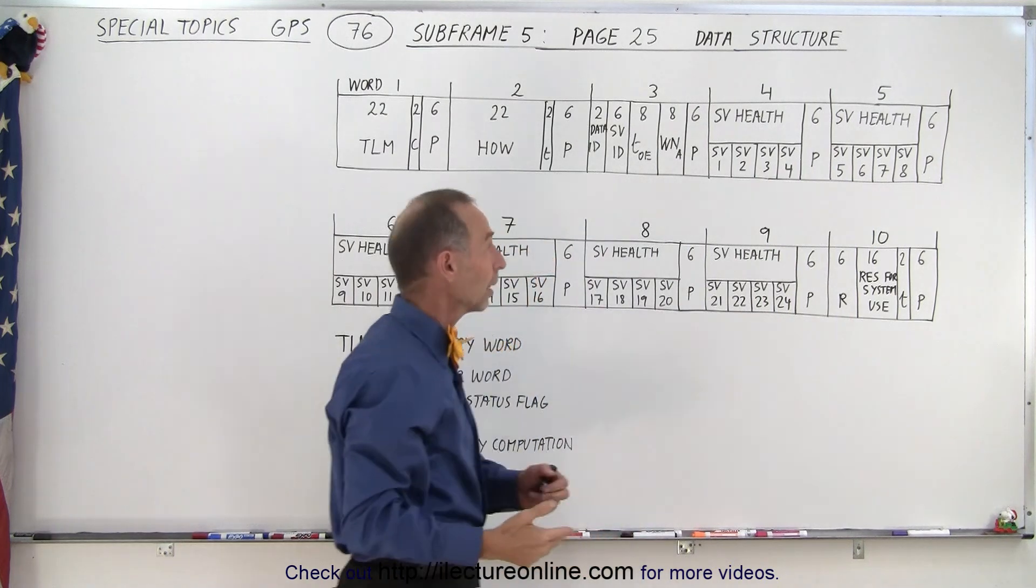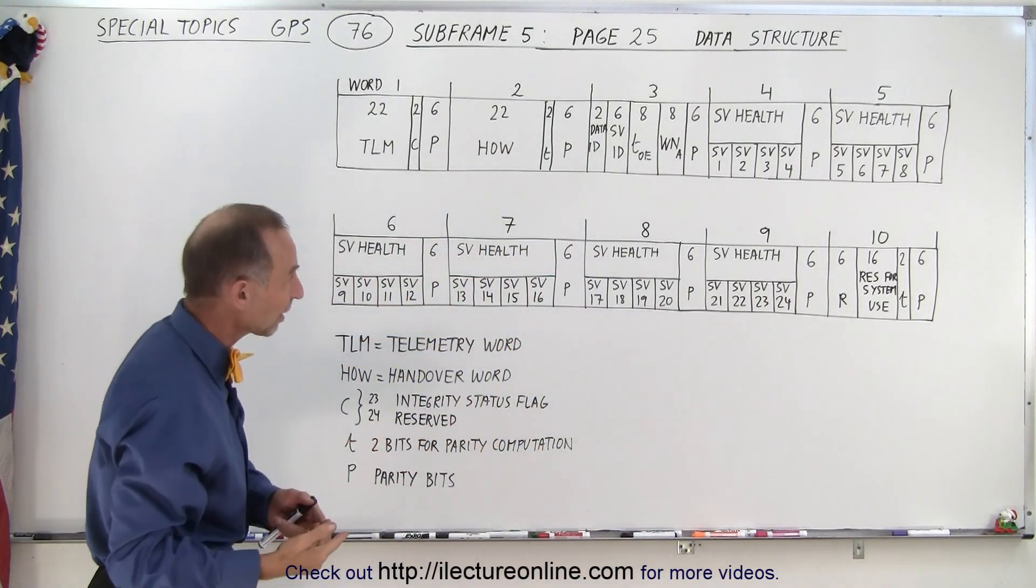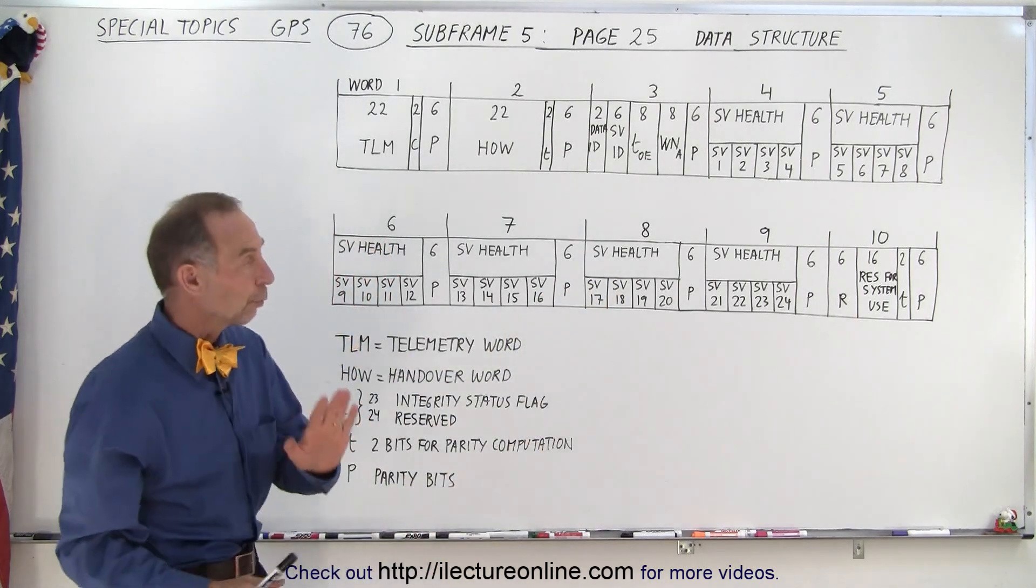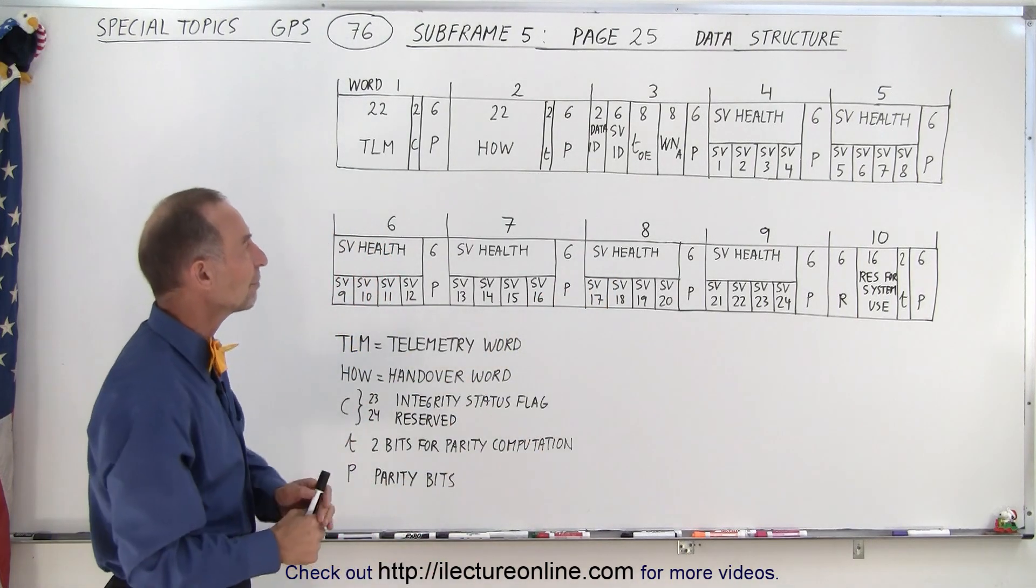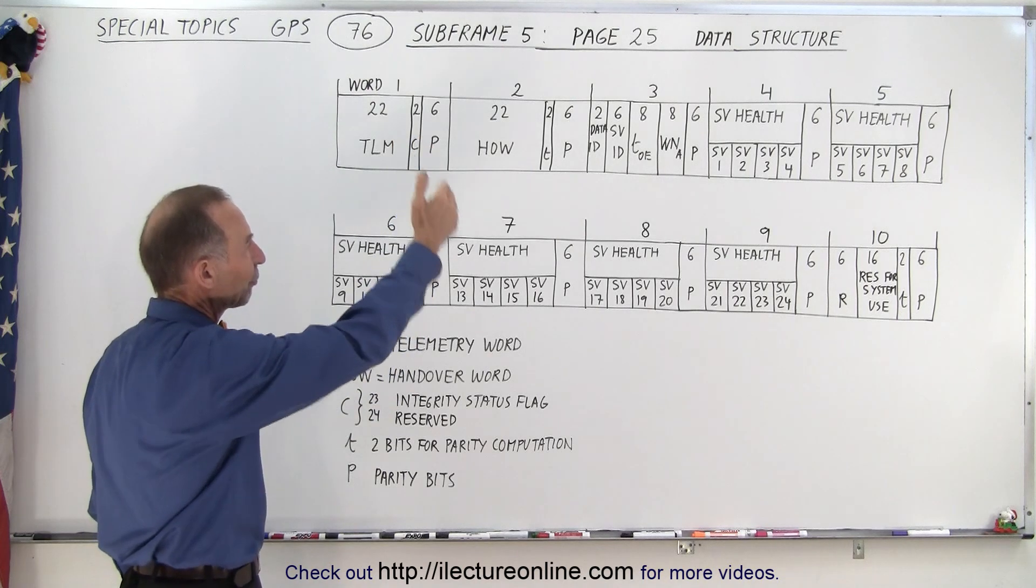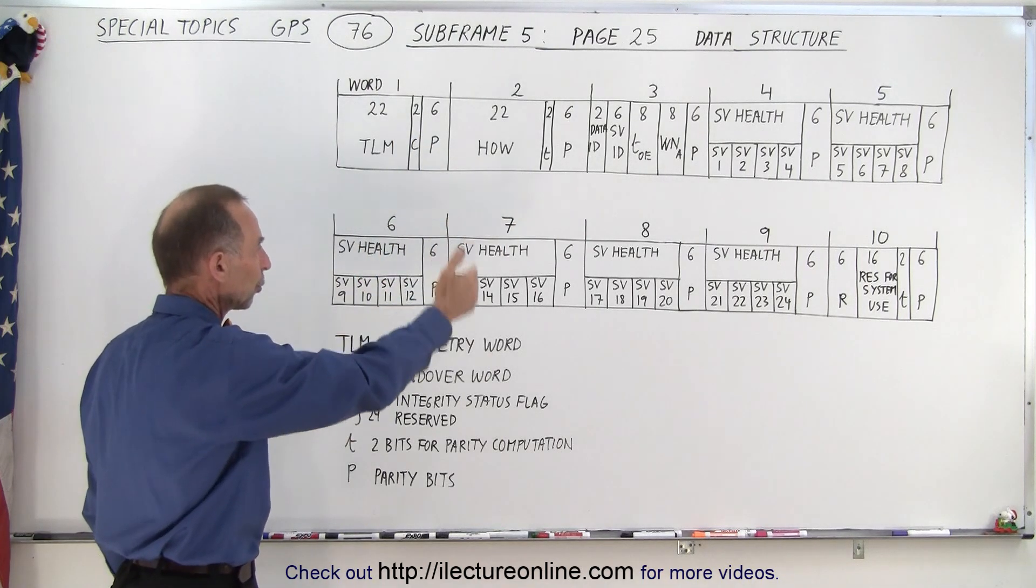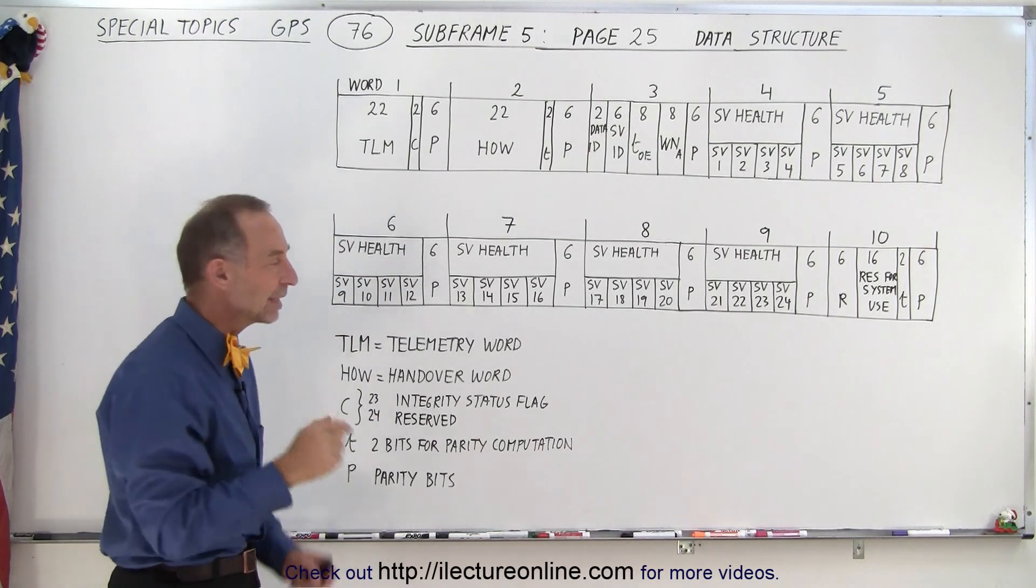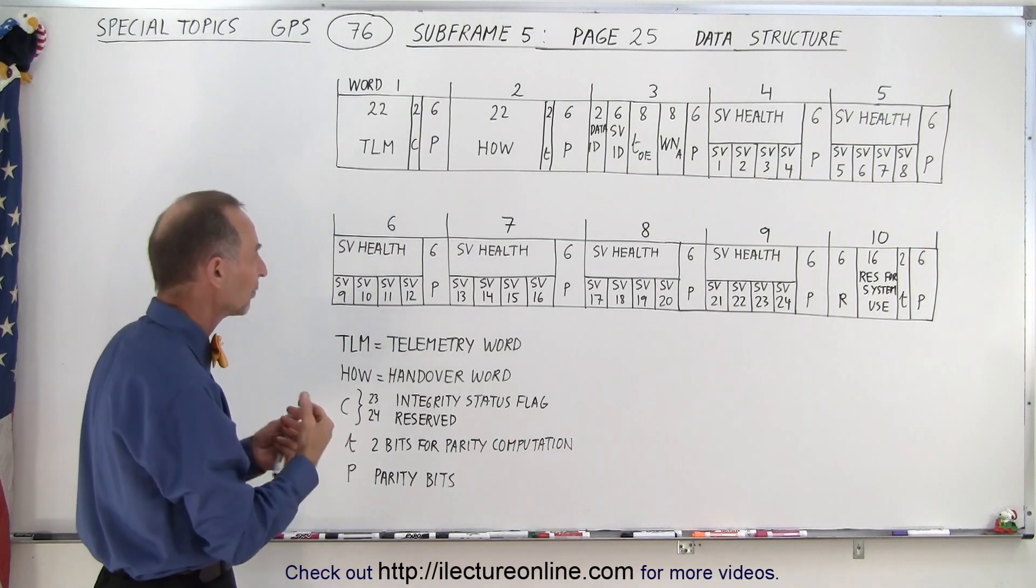Of course, 4 times 6 gives you 24 times 6, you need six of these words. So we have six of these words, four satellites each, six times four is 24. So you can see that it has 4, 8, 12, 16, 20, 24 six-bit sections, each containing the health information of that satellite.